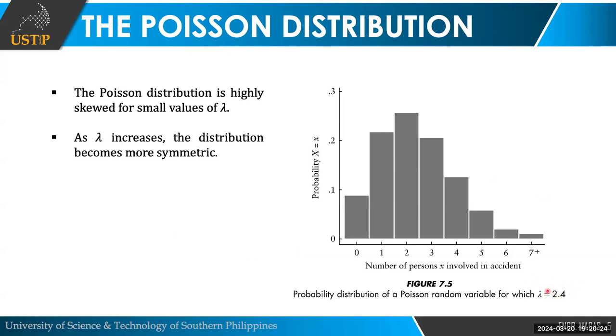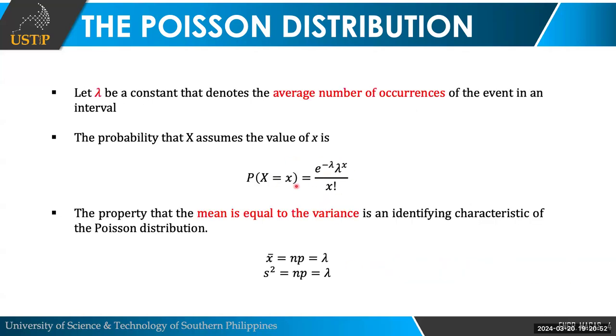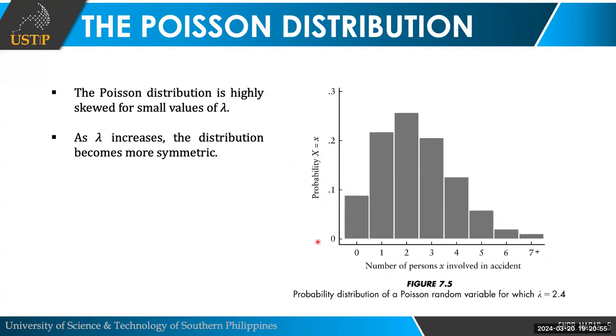We have this example. Your lambda is 2.4. Wala tagging n, wala tagging p, right? Given a lambda value of 2.4. So, this is the Poisson distribution of your random variable for which your lambda is 2.4. So, specific example, this is the number of persons x involved in accident. We don't know what kind of accident. And then, your y here is their probability. If your lambda is 2.4, you just substitute the value here sa formula to get the probability when x is equal to 0, when x is equal to 1, and so on. And this is your Poisson distribution for that certain value.